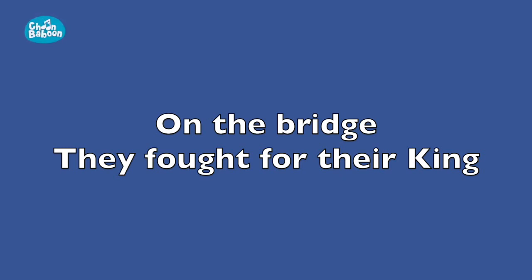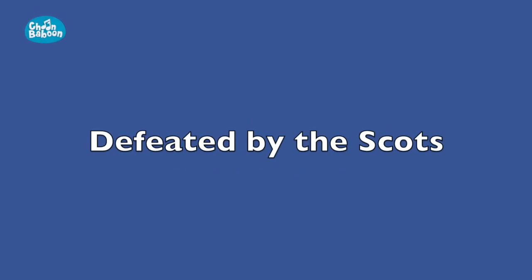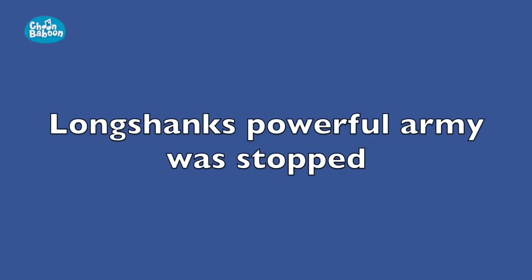Well done, everybody. Let's listen to Nat sing the next two lines of verse two. Here they come: Longshanks' powerful army was stopped, defeated by the Scots. Let's try that after six. One, two, three, four, five, six.